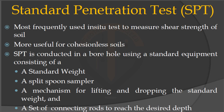SPT is conducted in a borehole using standard equipment consisting of a standard weight of 63.5 kg, a split spoon sampler which is used to extract soil samples from the soil at a desired depth, a mechanism for lifting and dropping the standard weight, and a set of connecting rods to reach the desired depth.